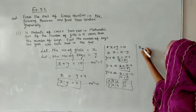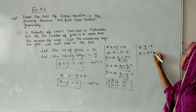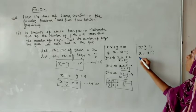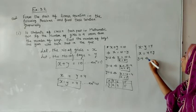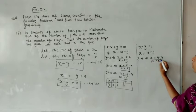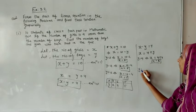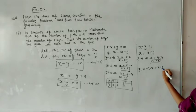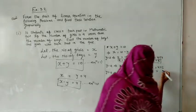Our second equation is x minus y equals 4. Rearranging, it becomes x equals 4 plus y. Here we have to note that the number of girls will always be 4 more than the number of boys. If y equals 4, then x equals 4 plus 4, which means girls will always be 4 more. If y equals 2, then x equals 6.